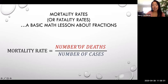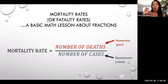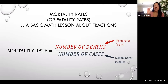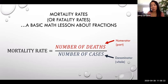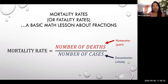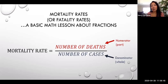The numerator is the top part of the fraction — it's the part of the whole — so it's the number of deaths from COVID-19. And the denominator is the whole: it's looking at the number of cases of people who are affected with it. Quick clarification: the mortality rate is not the number of deaths over the number of people in the world. It's the number of deaths out of those who have been infected. So really, it's a probability of the chances of someone experiencing death if they got the coronavirus disease.